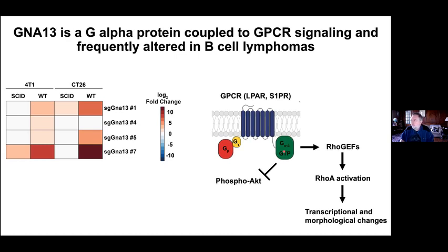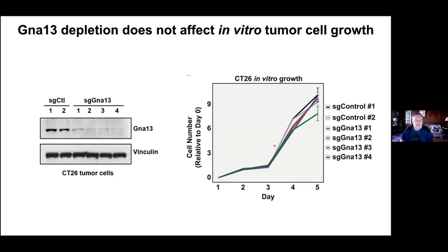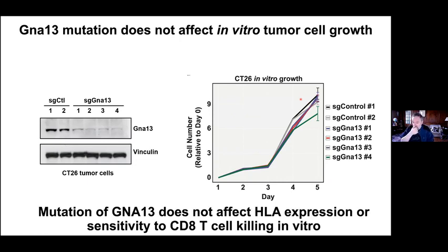The first question was whether GNA13 loss affected proliferation. Looking at four guides and knockdown efficiency relative to control guides, there's really no growth advantage in vitro — one guide is even slightly slower. We also looked at whether loss of GNA13 affected HLA expression — antigen presentation — or CTL T-cell killing in vitro. There was no effect of GNA13 loss at all. So it must be something different.